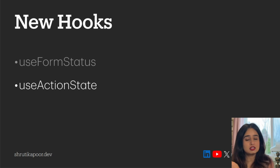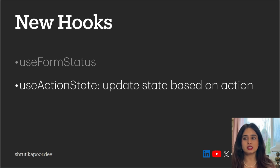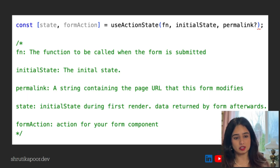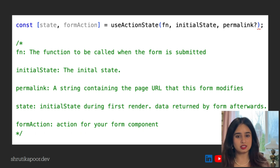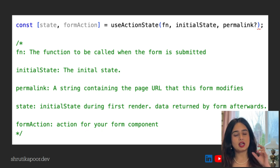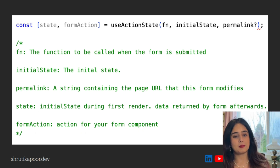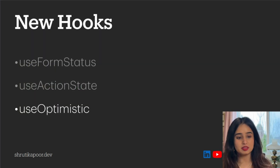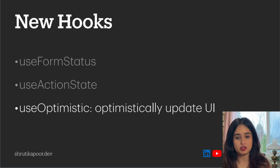useActionState gives you back an updated state based on the action performed. It accepts an action function to be called when the form is submitted, and an initial state. It returns a state — updated based on the action — and a formAction, which you attach to the form element's action attribute. You get the formAction back from useActionState and attach it to the form's action.